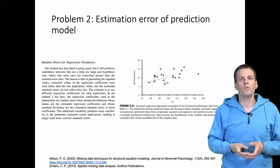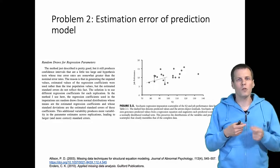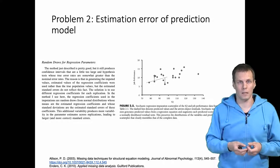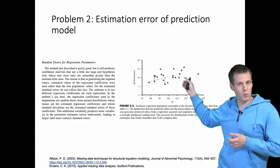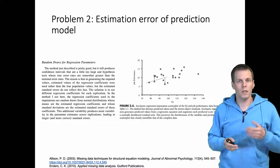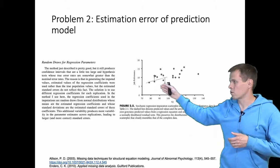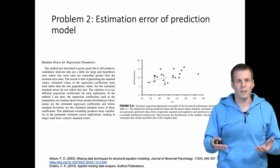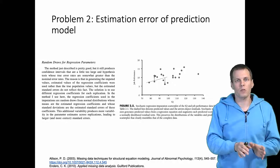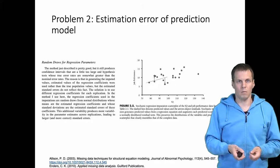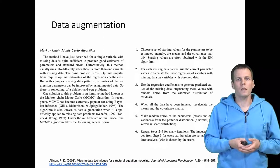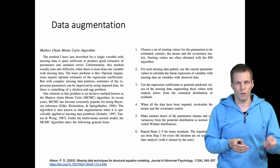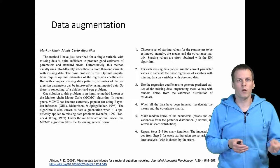In multiple imputation we address this by using a different set of parameters for the imputation model for each imputed dataset. So in practice we don't use the same regression line for every imputed dataset — if we have 10 imputed datasets we use 10 different regression lines. How do we come up with those 10 different regression lines in the first place if we have missing data in more than one variable? This is something the data augmentation algorithm provides. It solves the chicken-and-egg problem: to do imputation we need a regression model, but to calculate the regression model we need data, which we don't have before imputation.